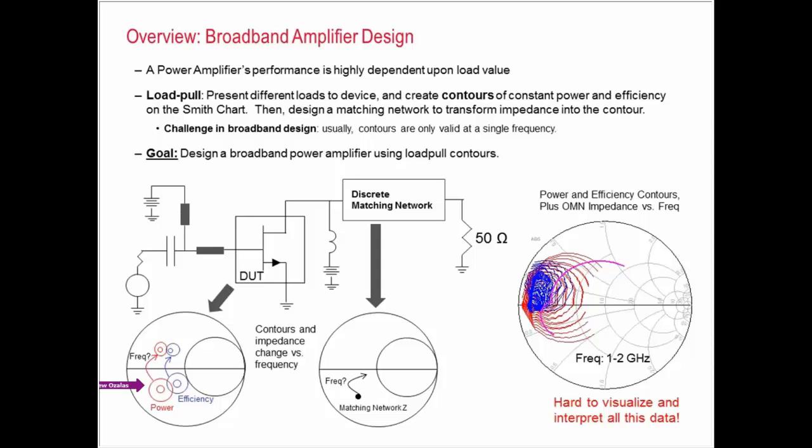What happens is the contours do two things. They actually move versus frequency so they can walk around the Smith chart, and they scale so they can get bigger or smaller or disappear completely depending on what frequency you're at. At the same time, the impedance matching network is moving too. You're trying to hit a moving contour with a moving impedance matching network, and it makes it a real issue in design.